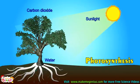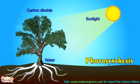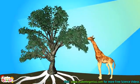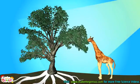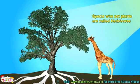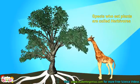So now you know plants make their own food. All other species, like animals and we humans, are dependent on plants. Now see, a giraffe is coming. It is eating the plant. Species who only eat plants are called herbivores.